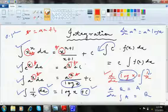So if it is 1 by star, it will be log star, but it will get divided by a.